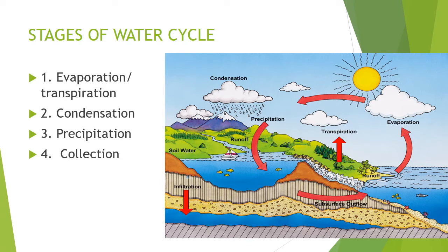Here in the picture you can see all four processes. This is evaporation, in which water turns to vapor. This is condensation, in which vapor turns to liquid droplets. This is precipitation, in which water comes back to the earth. And this is the runoff process — a part of collection — and this is infiltration, also a part of collection.